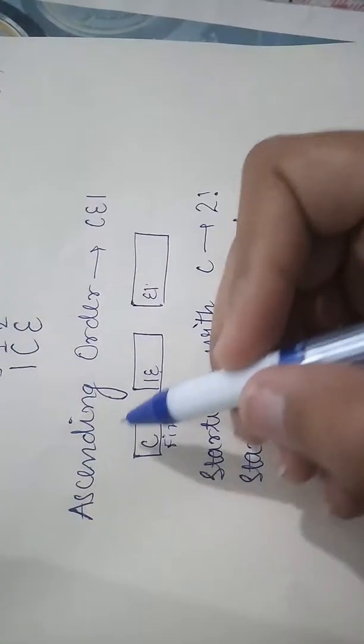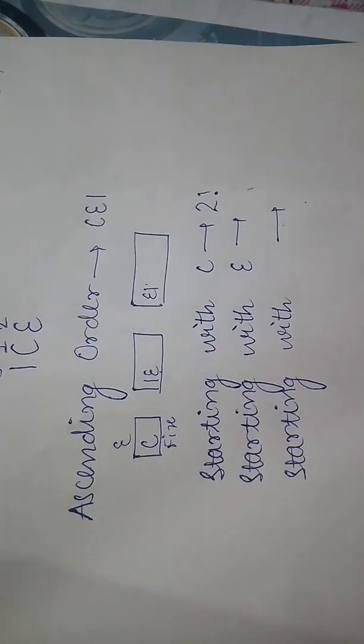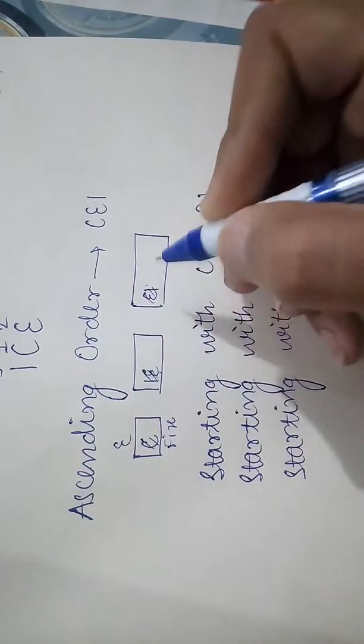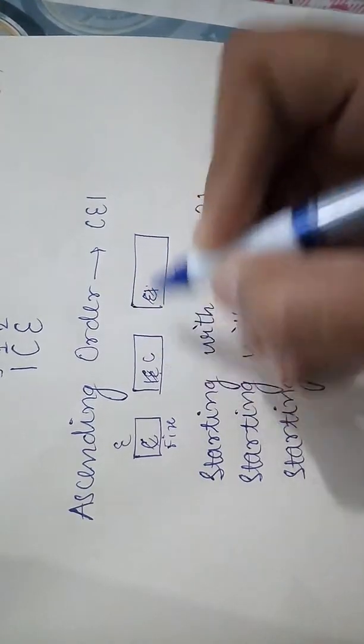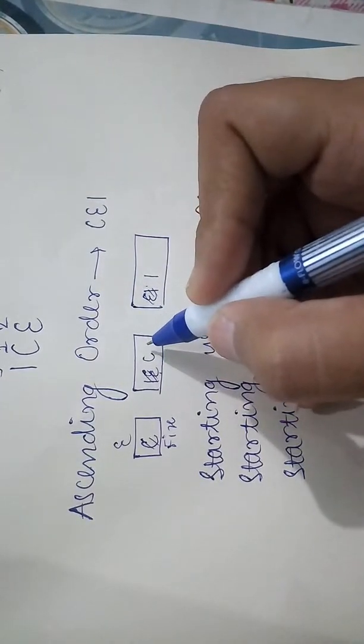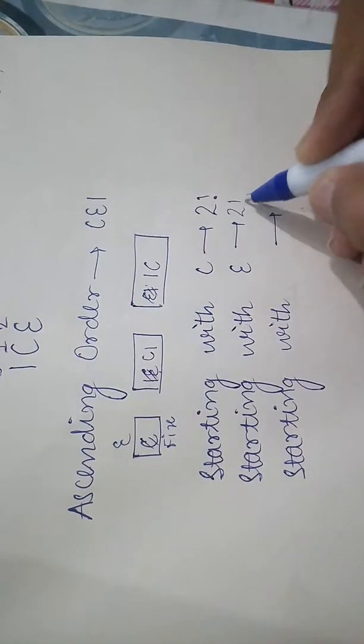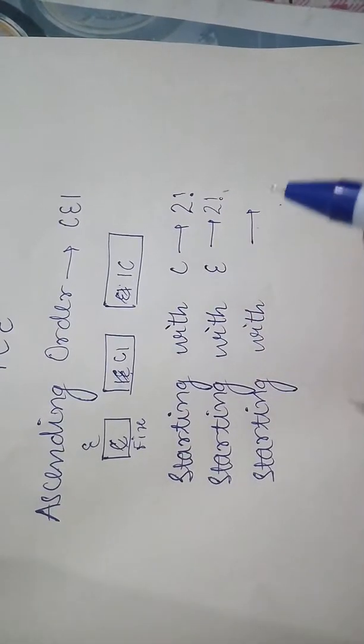And starting with E, now we have E fixed. Now, how can we fill it? C here and I, or I here and C. This is our two factorial ways.